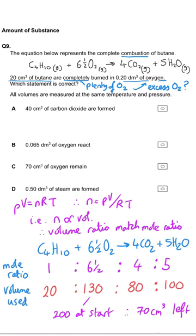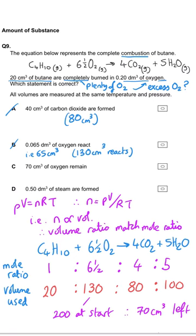Checking the options: A says 40 cm³ of CO₂ is formed — no, it's 80 cm³. B says 0.065 dm³ of oxygen reacts — that's 65 cm³, but it should be 130 cm³ (0.13 dm³), so B is wrong. C says 70 cm³ of oxygen remains — yes, that's correct, so C is the answer. D is wrong because 100 cm³ of water is produced, which is 0.1 dm³.